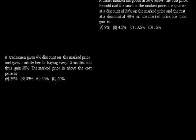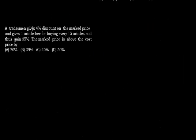Let's move to the next problem. A trader gives a 4% discount on the market price and gives 1 article free for buying 15 articles, and thus gains 35%. We have to calculate by what percent the market price is above the cost price. Key principle: gain and loss come from selling price and cost price, while discount comes from market price and selling price.